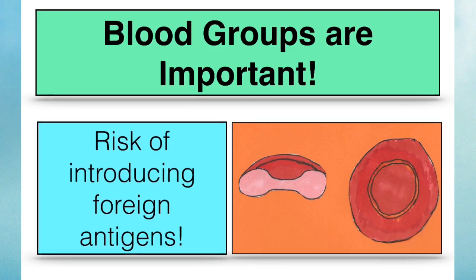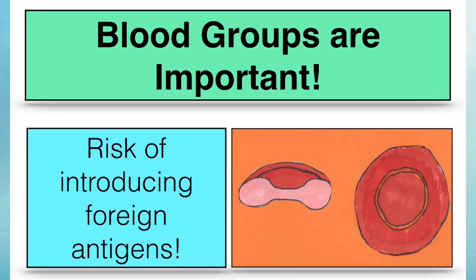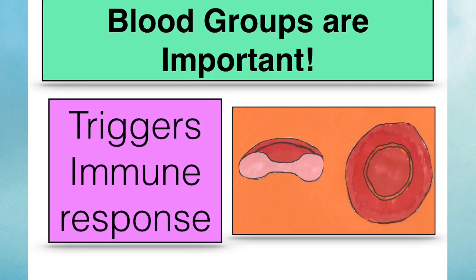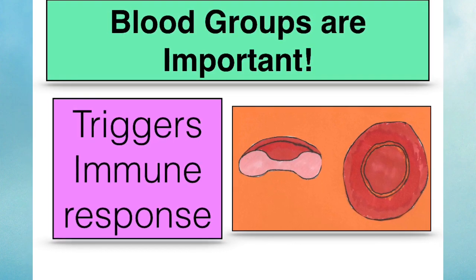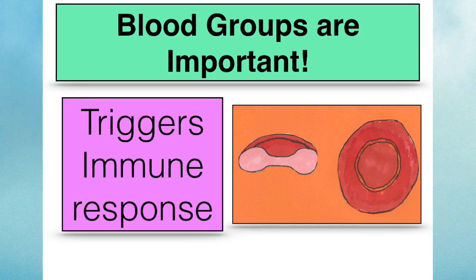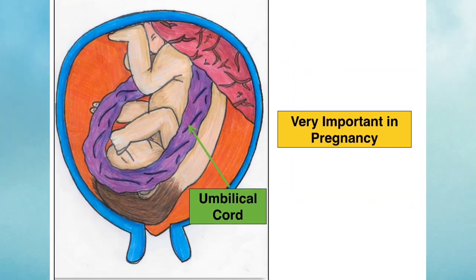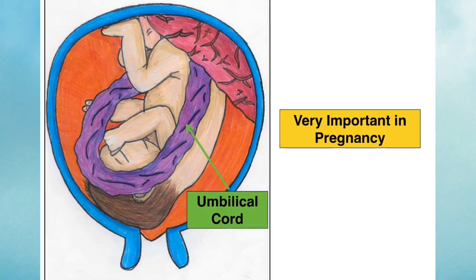Knowing your blood group is really important. If you don't know your blood group, you risk introducing foreign antigens into your body. If you introduce foreign antigens, antigens that are new to your system, well then this will trigger an immune response, usually the production of antibodies. This is one of the reasons for those all-important blood tests when you become pregnant.